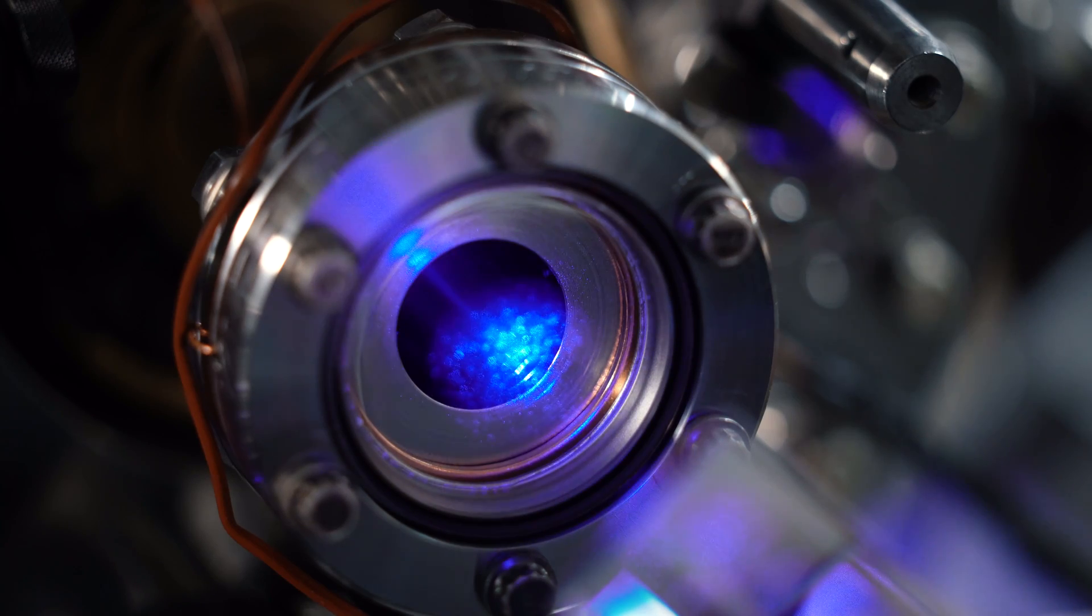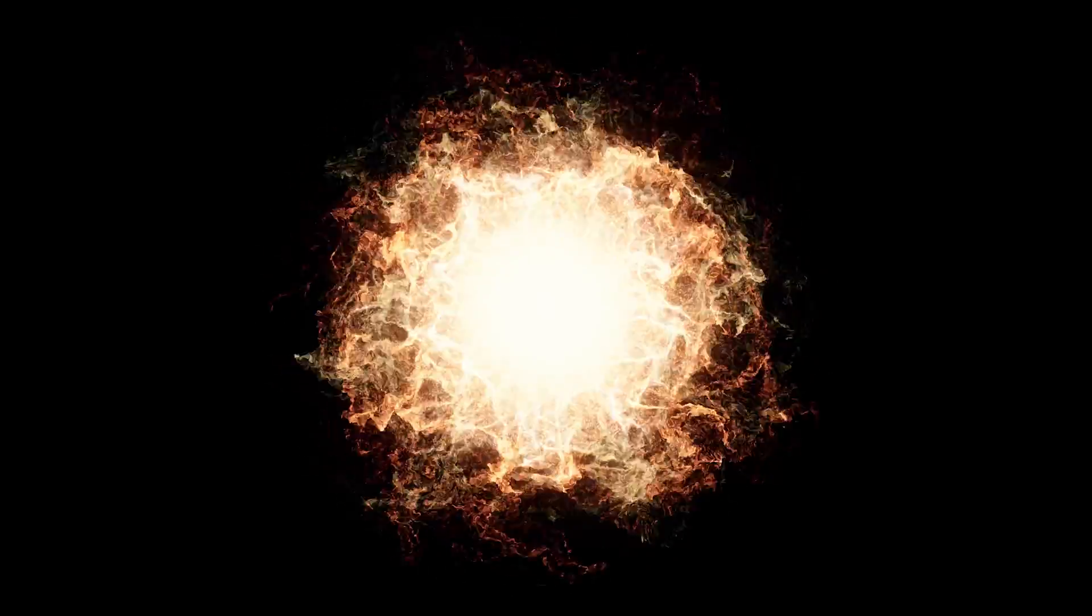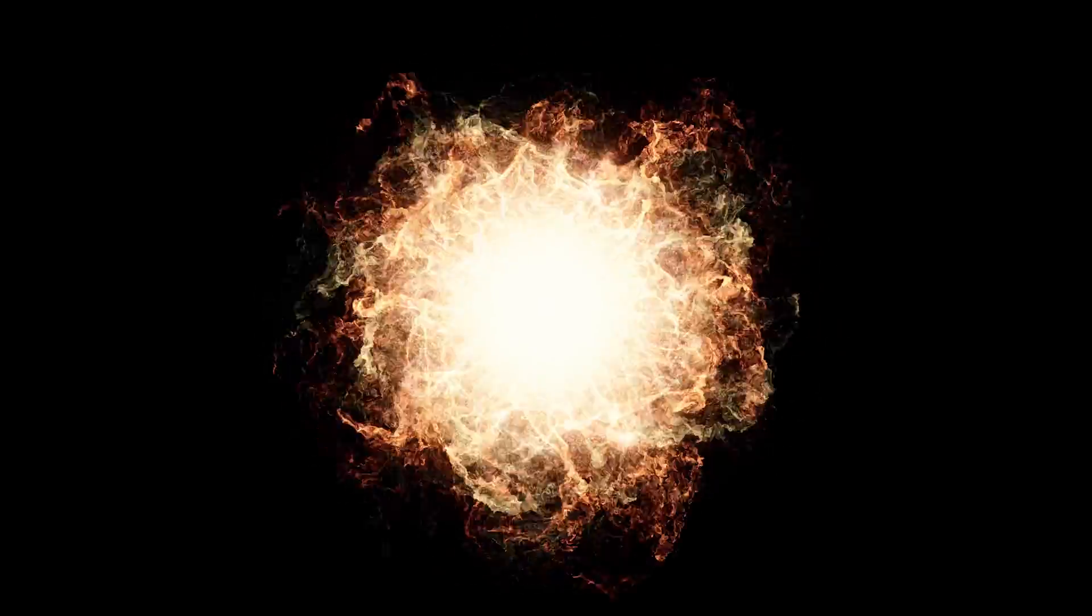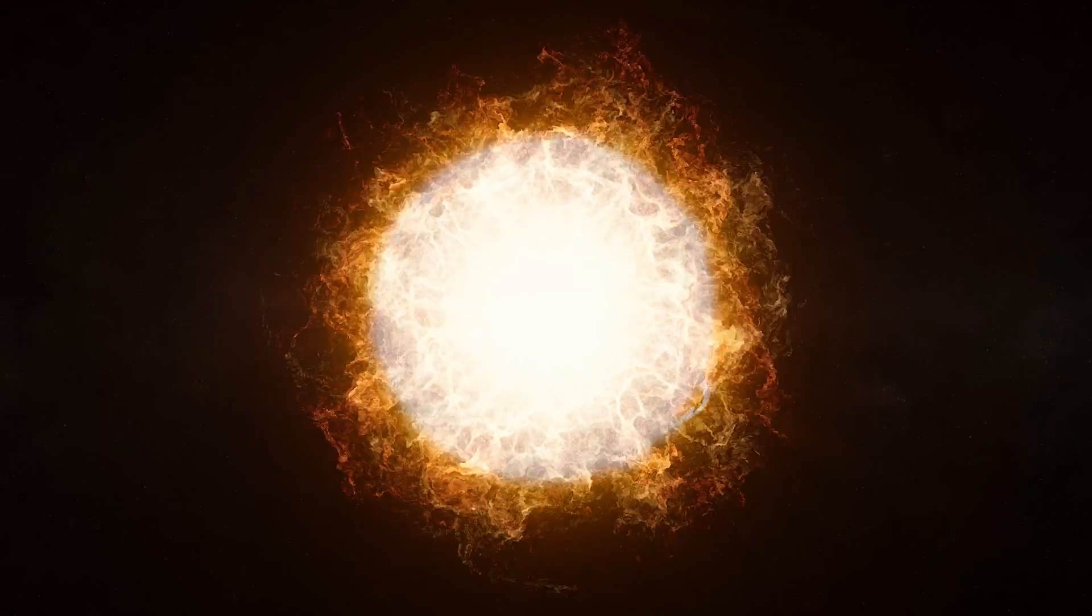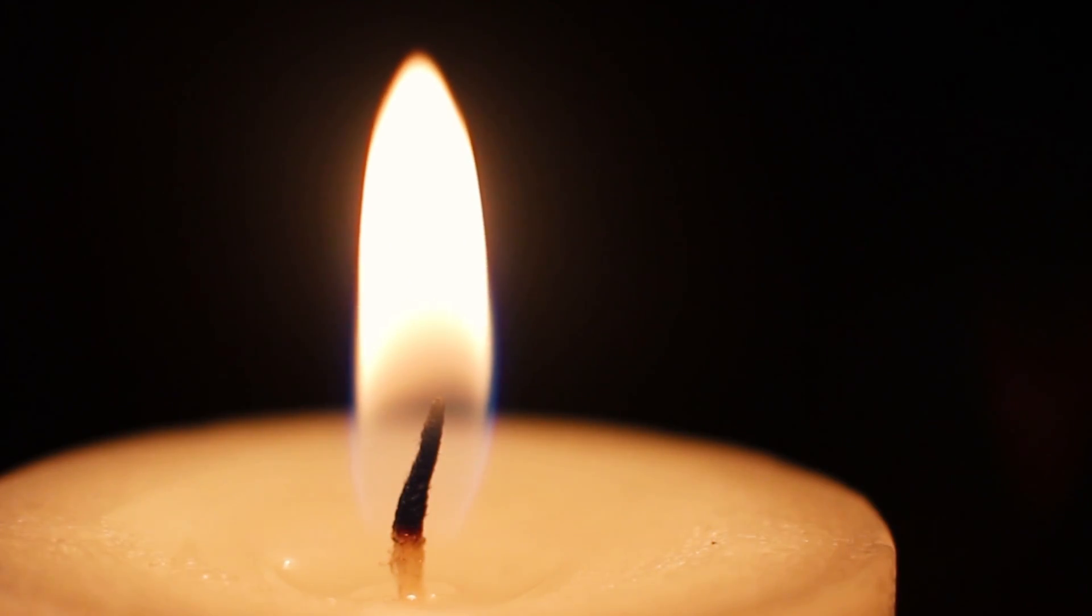Plasma is a state of matter in which the electrons are ripped off of atoms or molecules to produce a soup of charged particles. We find them on the Sun, in a candle flame, or a fluorescent light bulb.